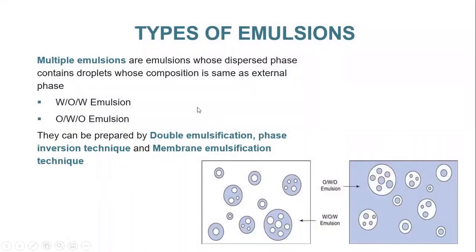Another major type of emulsion is multiple emulsion, whose dispersed phase contains droplets whose composition is the same as the external phase. There are two types of multiple emulsions: water-in-oil-in-water emulsions and oil-in-water-in-oil emulsions. The particle size of the droplets in multiple emulsions is 0.5 to 3 micrometers.